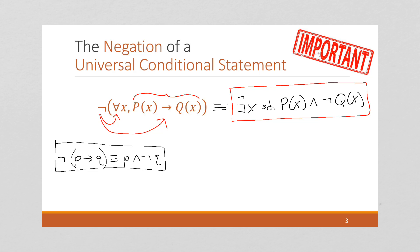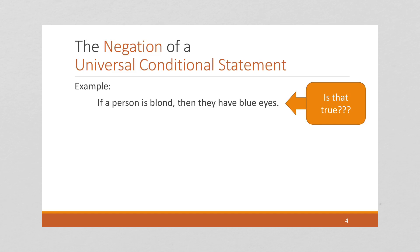Finding the negation of a universal conditional statement becomes extremely important later on, so really remember this and get comfortable with it. Let's do an example: 'If a person is blonde, then they have blue eyes.' This is a universal conditional statement — we are implying a domain of all people. Is it true?